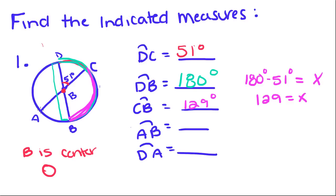Now they want arc AB. If you look, DBC is a central angle, ABC is a central angle, and ABE is a central angle. So the arc equals the angle. Now if you look at these two angles, they are vertical angles. And if you remember our rule about vertical angles, they have the same measure — so this angle is also 51 degrees. Because this is a central angle, that means the measure of arc AE is also 51 degrees.